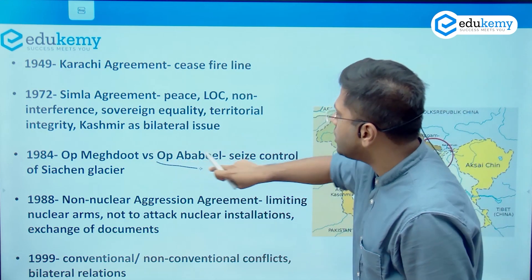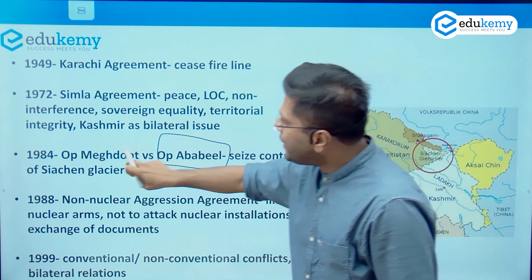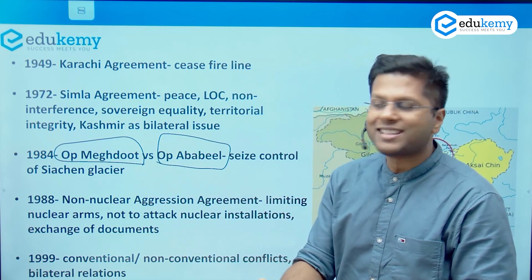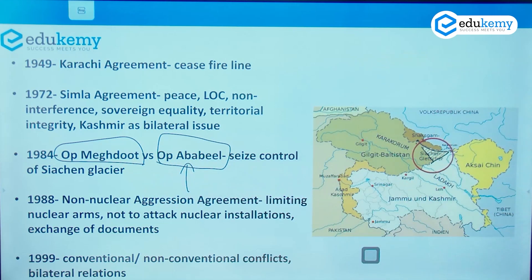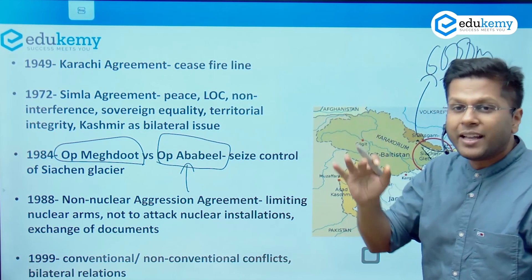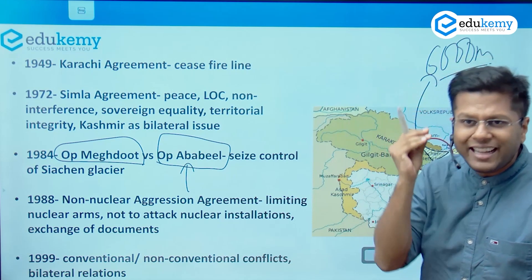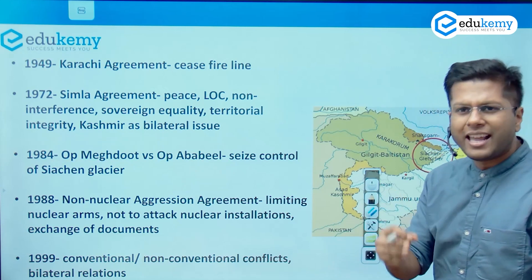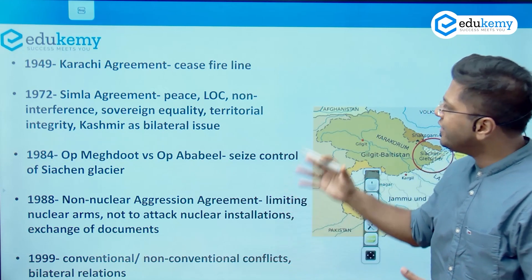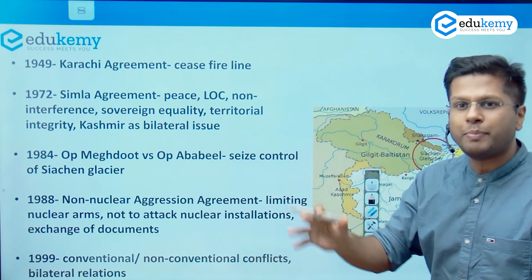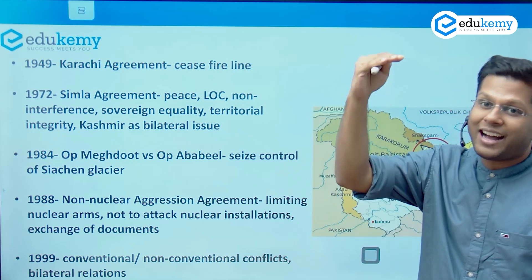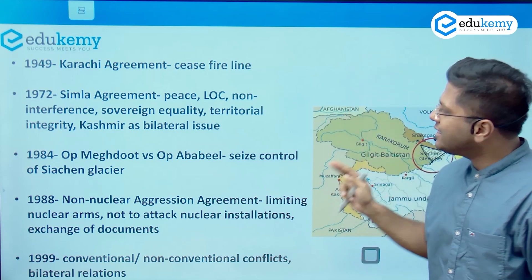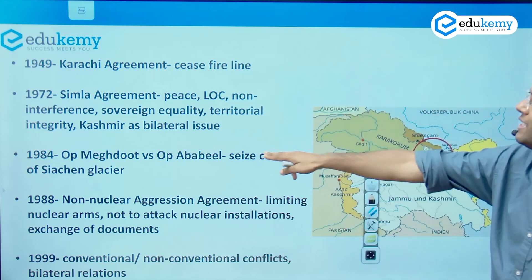Pakistan was about to initiate Operation Ababeel, when India preempted it — before the execution of Pakistan's operation, India executed Operation Meghdoot in 1984 and occupied the top of the Siachen Glacier. This is around 6,000 meters — about 20,000 feet above mean sea level — where there is hardly any air to breathe. India has a strategic edge here because Indian soldiers are sitting at a higher level than Pakistani soldiers, who are maybe 1,000 feet below them.